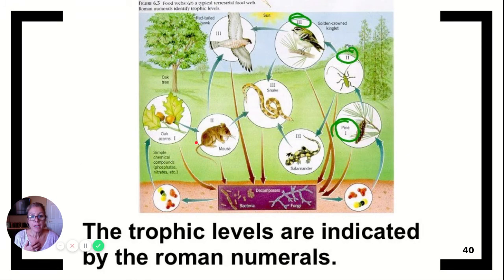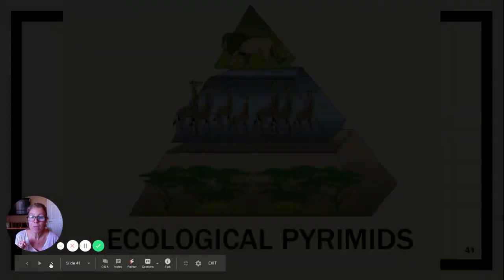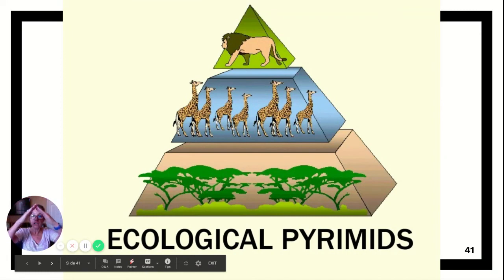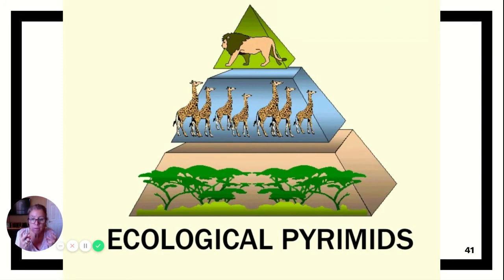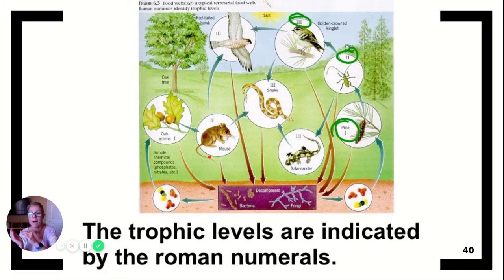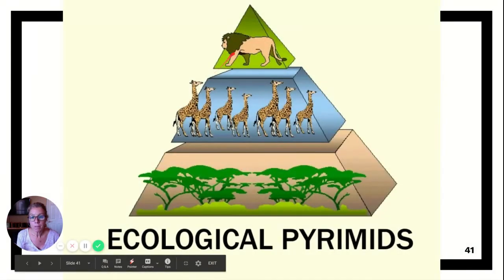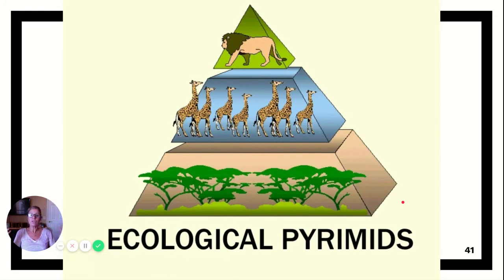Looking at trophic levels: the oak tree is at the first trophic level, the mouse eating its nuts is at the second trophic level, and the carnivore eating the mouse is at the third trophic level. Now we can stack those trophic levels on top of each other. Logically, do we have more mice or more snakes? If snakes need mice to stay alive, hopefully there are more mice than snakes. That's why they represent this as an ecological pyramid.